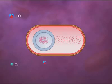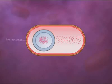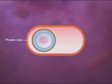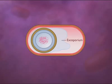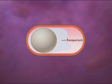A protein coat forms exterior to the cortex, and the spore becomes mature. Some spores form an additional layer called the exosporium. A mature spore is resistant to environmental conditions.